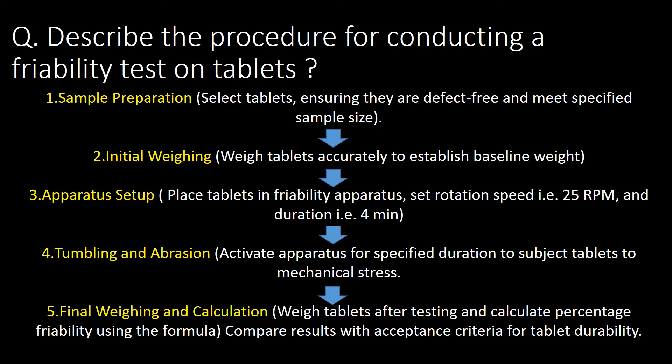Describe the procedure for conducting a friability test on tablets. The five key steps followed during the friability test are: first, sample preparation; second, initial weighing; third, apparatus setup; fourth, tumbling and abrasion; and fifth, final weighing and calculation.